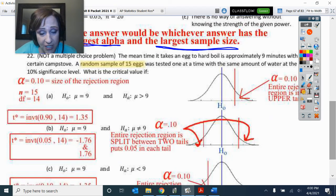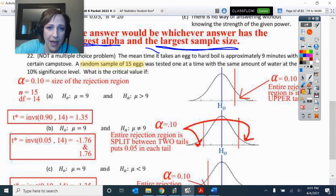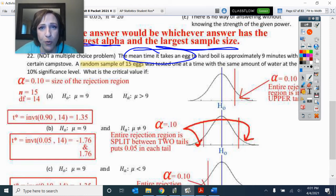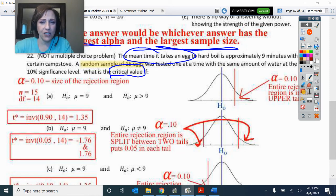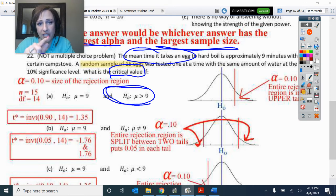Okay. Here we go. Number 22 was not a multiple choice question. It was a short answer. But let's take a look at this. So we have a random sample of 15. So our degrees of freedom was 14. And we were talking about the average time it takes to boil an egg. Appropriate with Easter here happening right around this time. So we had the average time to make the egg too hard to boil is approximately nine minutes with a certain camp stove. Okay. So the question is, what is the critical value?